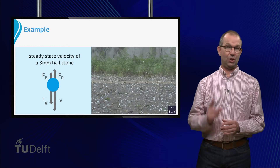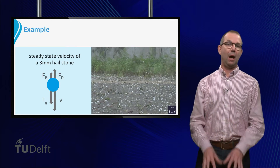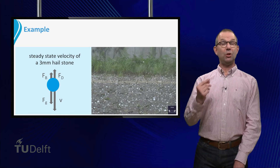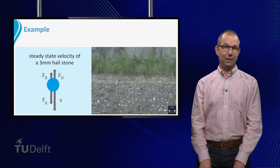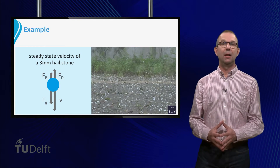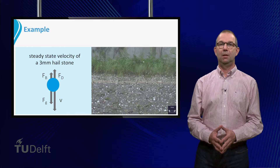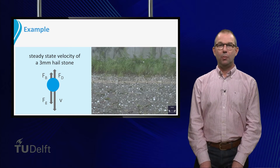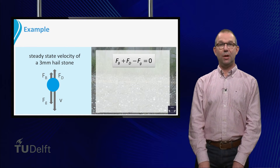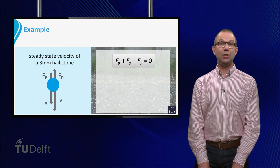The drag force also points upwards. In the beginning, the drag force is small as the hailstone is accelerating downwards, and thus its velocity will increase. This will stop when all forces on the hailstone balance, as we know from Newton's second law, and the hailstone falls at a constant velocity. We call this the terminal velocity. Eventually, the hailstone reaches a steady-state velocity when the sum of forces is zero.